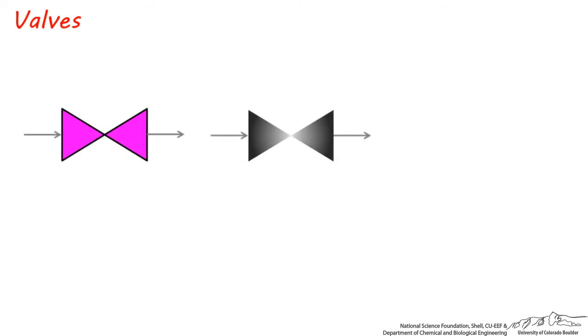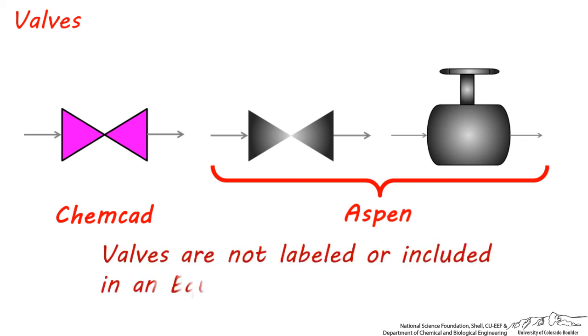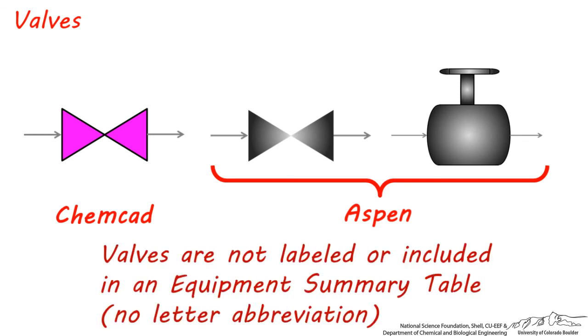In terms of simulation software, this valve symbol is the one typically used in ChemCAD, and this is the typical valve used in Aspen. This is also a valve you can select in Aspen, though it tends to be somewhat cryptic because not everyone can recognize it. One of the reasons it's important to avoid using confusing symbols for valves is because valves are not labeled or included in an equipment summary table and do not have a letter abbreviation.